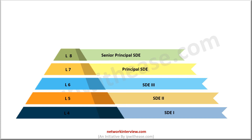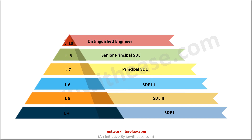The average annual salary at L8 is $770,000 or even more. The next role is the supreme authority in the technical chain of command, called the Distinguished Engineer, or band L10. It's very rare to become a Distinguished Engineer at Amazon, as only a dozen engineers have achieved this title. To become one, you should have created famous products or instrumental technologies like AWS or Kindle — in short, you should be a significant individual contributor. The average annual salary is $950,000 to $970,000.